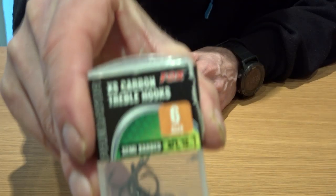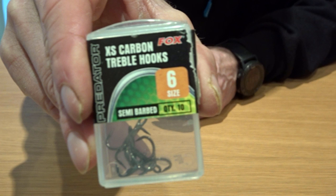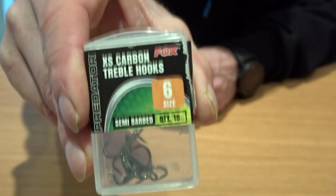I don't tend to fish dead baits that are absolutely huge, so I'll probably go up to half a mackerel tail as the biggest bait that I'll use when I'm dead baiting. So the trebles I use are the Fox Excess Carbon Predators.